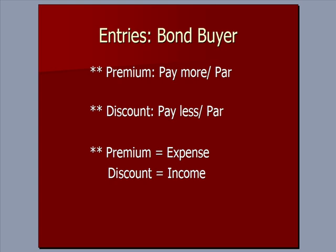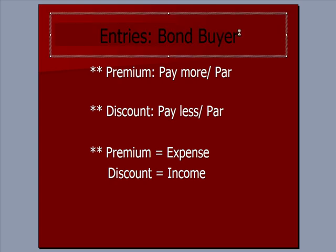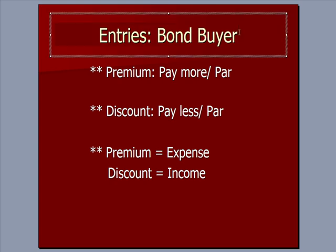Some things to remember: premium means the buyer is paying more than par; discount on bond payable means the buyer is paying less than par. If we're the issuer, we're going to have income from the premium and expense on the discount. But now let's look at the reverse — let's look at it from the bond buyer's perspective.